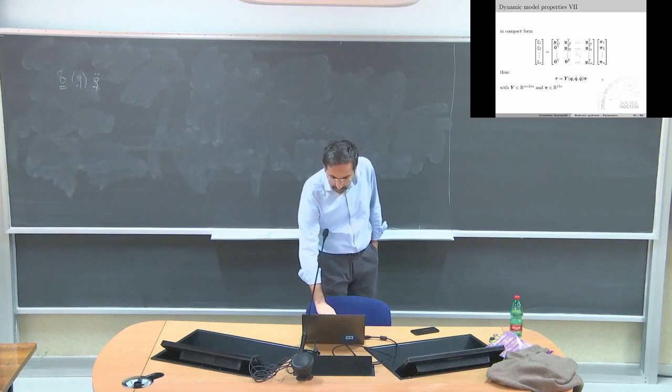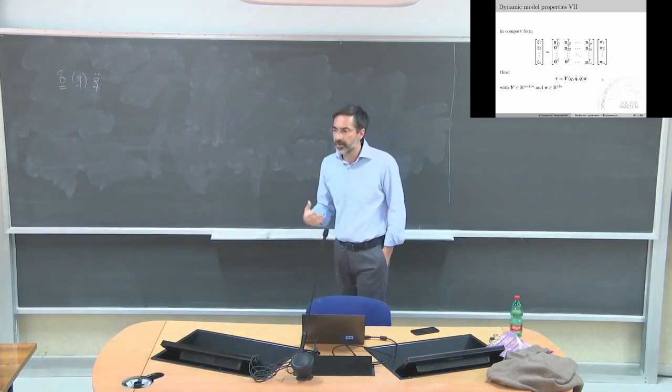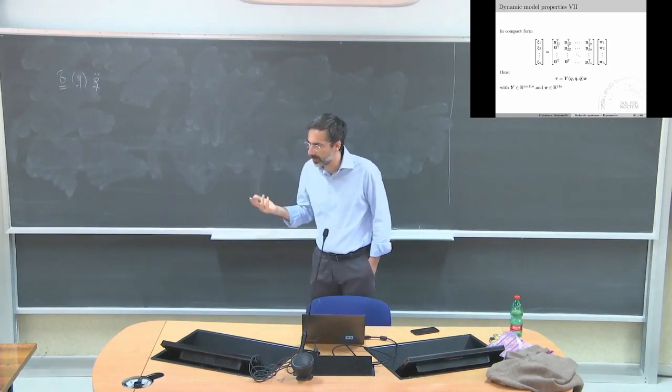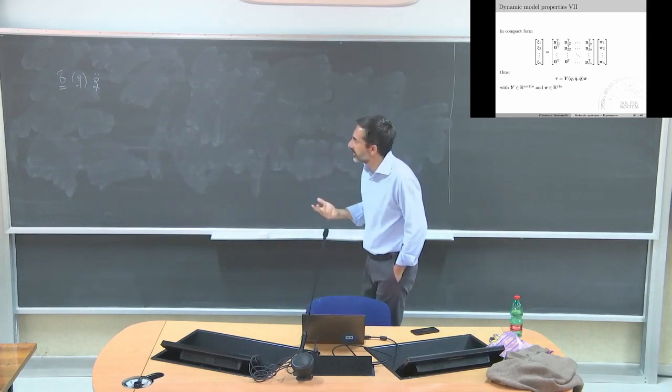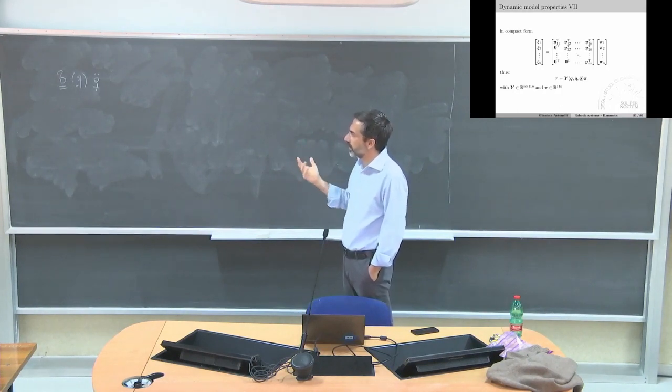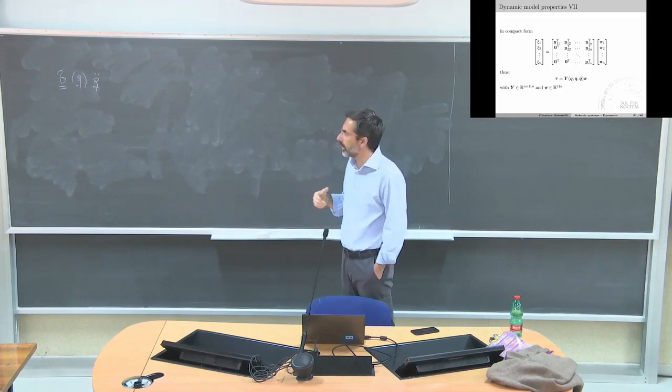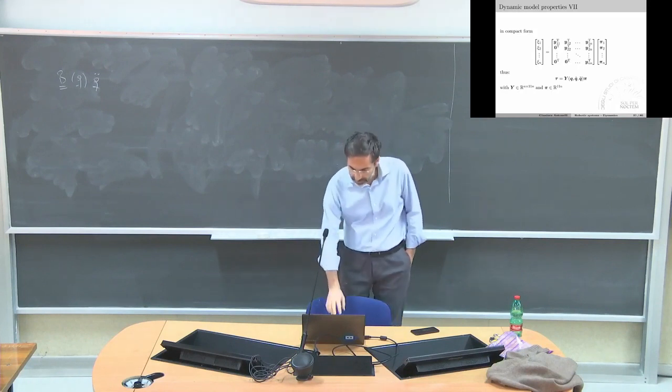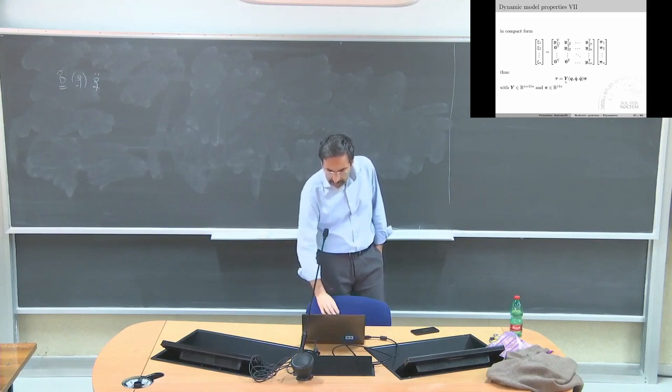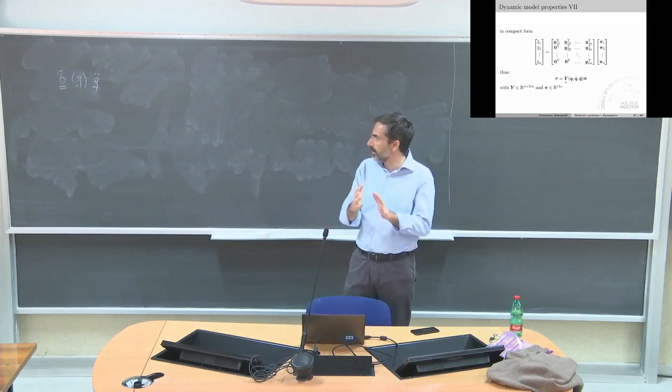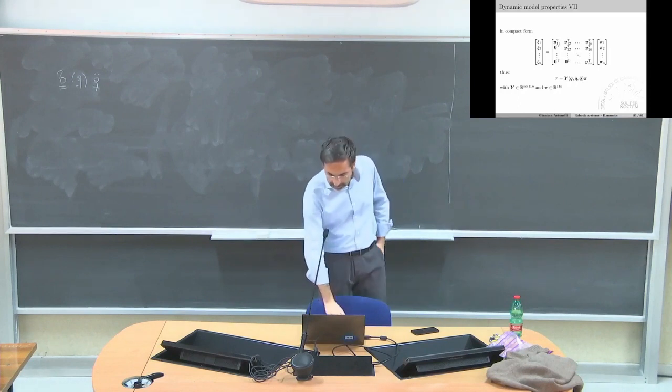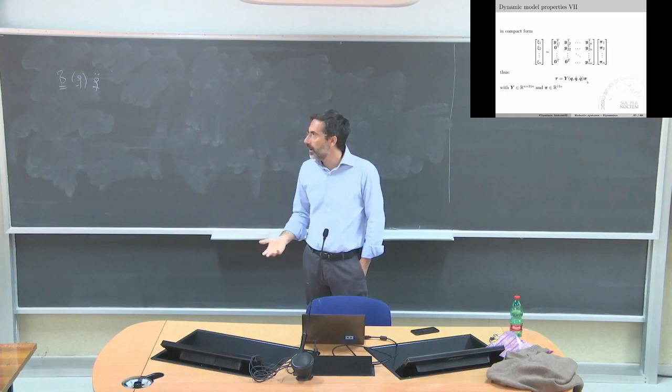What is important is that we have matrices again. System theory, robotics, linear algebra is everywhere. Tau is the vector with the joint torques. I can rewrite the dynamics using a matrix with n rows and a certain number of columns (70, 80, depends on what I said) multiplied by this vector of constant dynamic parameters.